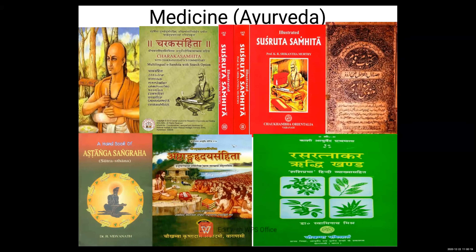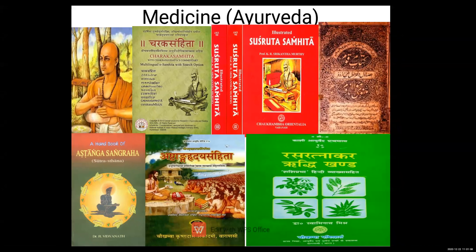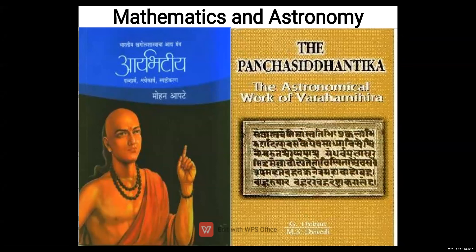To summarize the Ayurveda section: Indian medical science is known as Ayurveda, which covers understanding symptoms, diagnosing causes, and treatment. The Charak Samhita and the Sushruta Samhita — which was translated into Arabic as the Kitab-e-Susruta — along with the Ashtanga Sangraha and Ashtanga Hridaya Samhita by Vagbhata, and the Rasaratnakara by Nagarjuna describing chemicals and metals, are the key texts.